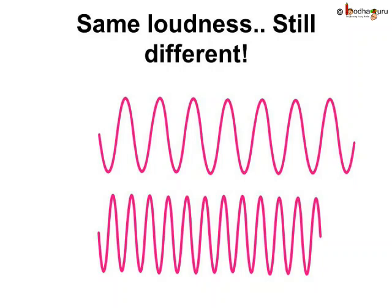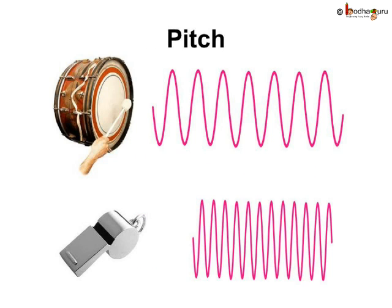Here, the loudness is kept the same. Still, the sound is coming different. So, what is different here? The slowness or highness of sound is the pitch. The pitch of sound depends on how fast the object vibrates. Something that vibrates slowly makes a low-pitched sound. Something that vibrates very fast makes a high-pitched sound.